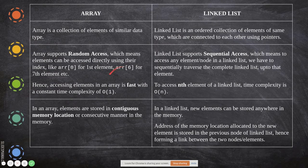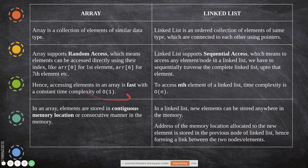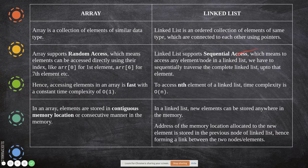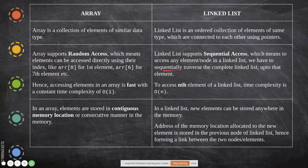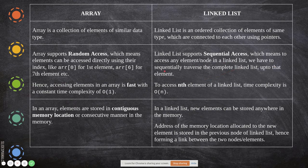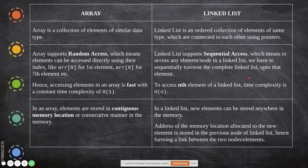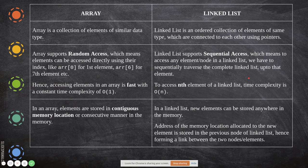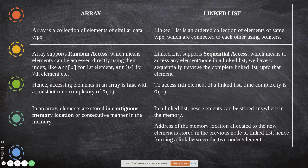The array supports random access. For example, array of 6, array of 0, like that you can access. But here it is not possible. It is strictly sequential access, which means to access any element or node in a linked list, we have to sequentially traverse the complete linked list. If I have to access B, I have to access the node before, then the node before, and so on.